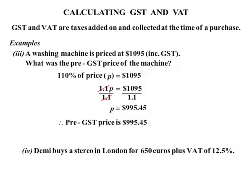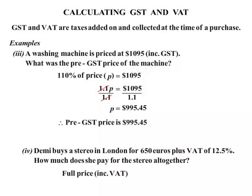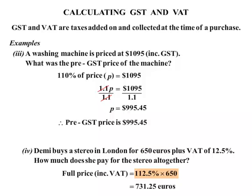Finally, Demi buys a stereo in London for €650 plus VAT of 12.5%. You'll find that various countries around the world have different percentages for their GST or VAT. We're asked how much does she pay for the stereo altogether? The VAT is 12.5%, so the original 100% plus another 12.5% means we need to find 112.5% of €650. That works out to be €731.25.